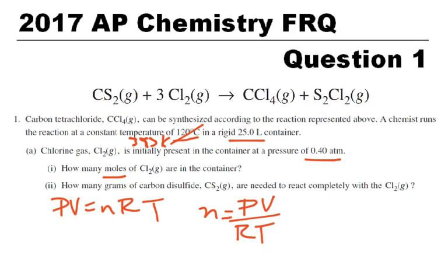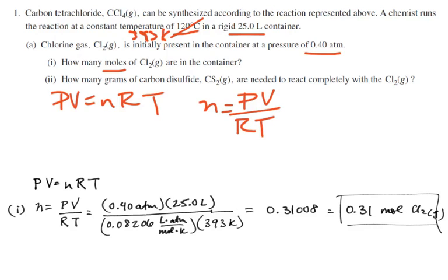R is a value you can get from the chart that comes with the test. So PV equals nRT, I solve for n, and I put in my 0.4 atmospheres and 25 liters. From the chart, R is 0.08206 liter atmospheres per mole Kelvin, and the temperature is 393 Kelvin. My liters cancel out, my atmospheres cancel out, and my Kelvin cancels out.